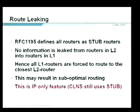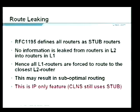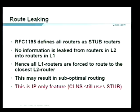Route leaking is a newer feature. RFC 1195 (ISIS for IP) defines all routers in a stub — so no information is leaked from L2 into the L1 database. Hence all routers are forced to route to the closest L1/L2 router, which may result in suboptimal routing.